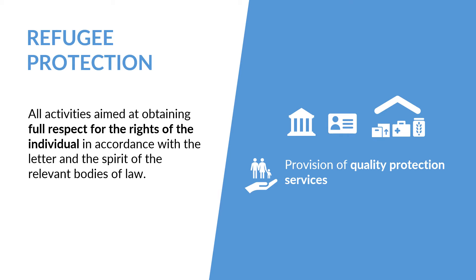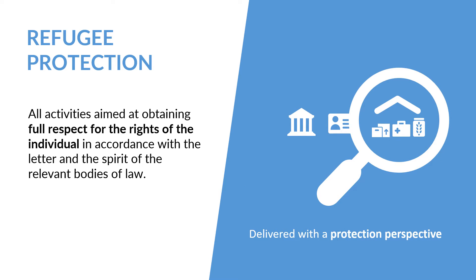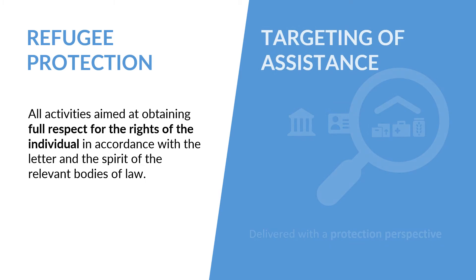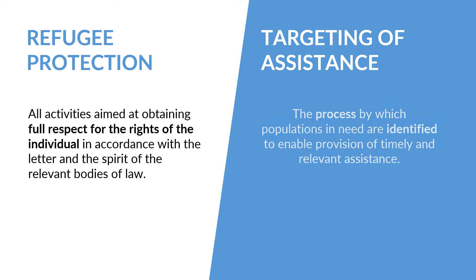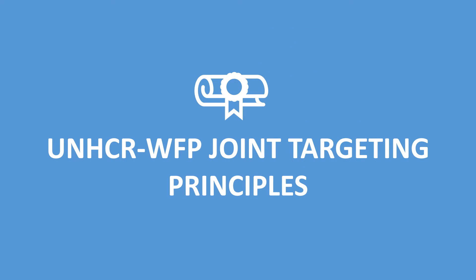These should be delivered with a protection perspective. Targeting of assistance is the process by which populations in need are identified to enable the provision of timely and relevant assistance, ensuring that people receive the most appropriate support to address their needs and reinforce their capacities in support of their protection, while ensuring the effective use of resources. The UNHCR–WFP joint targeting guidance is underpinned by joint principles committing the two agencies to collaborate on targeting.